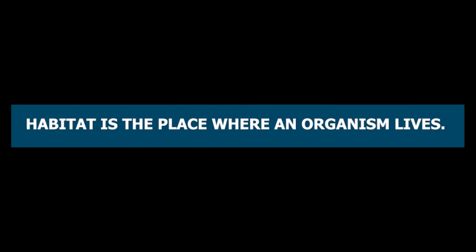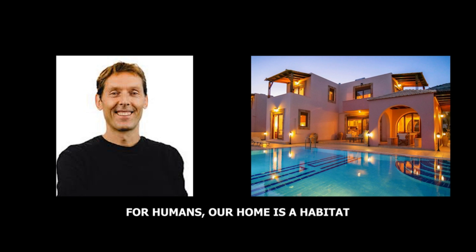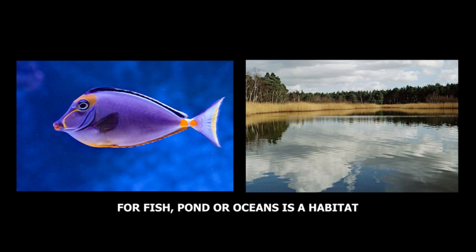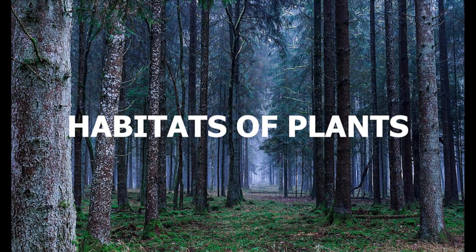Habitat is the place where an organism lives. For example, for wild animals, forest is a habitat; for humans, our homes are our habitat. For fish, a pond or ocean is a habitat. In this video, we will learn about different habitats of plants.